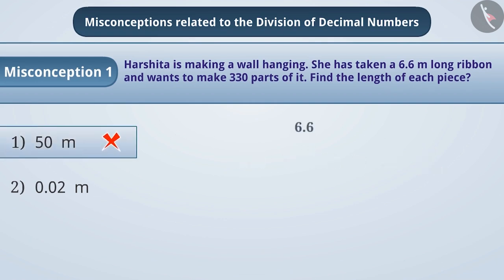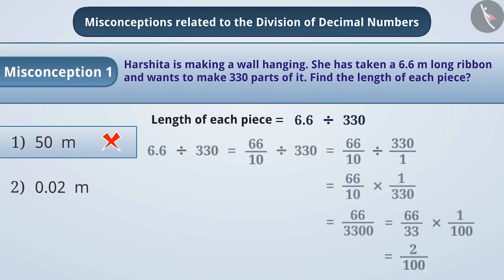Here, Harshita has divided 6.6 meters into 330 parts. So, the length of each part will be obtained from 6.6 divided by 330. We can do this division as follows. Pause the video and try to understand.